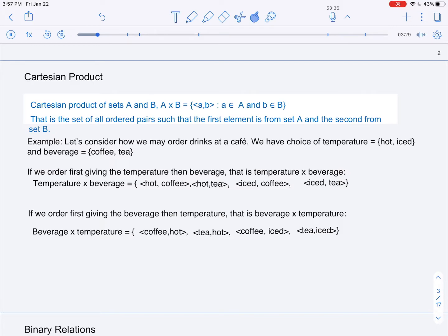However, if instead we ordered by giving the beverage first and then the temperature, that would mean we would be specifying our order from the Cartesian product of the beverage across the temperature. Here we have coffee hot, tea hot, coffee iced, or tea iced.